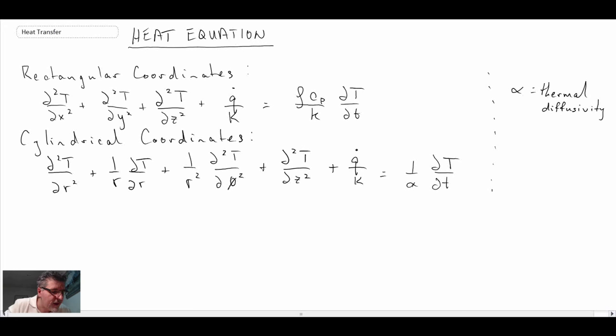It has the symbol alpha and is defined as the thermal conductivity of the solid divided by the density and specific heat capacity of the solid. So that is the thermal diffusivity. We put it into the equation as one over alpha. And then finally, looking at the heat equation in spherical coordinates.